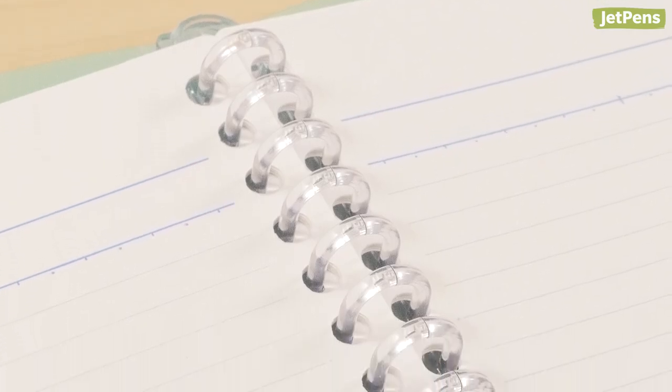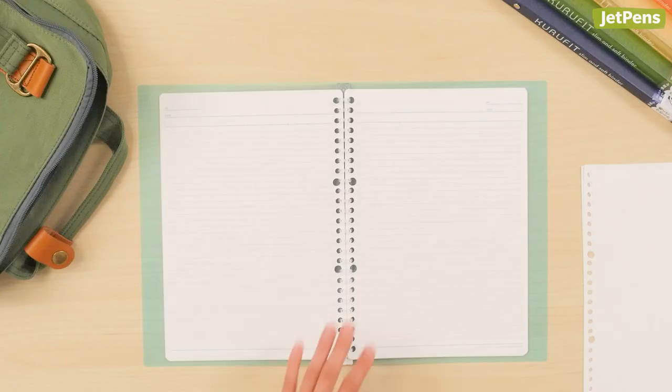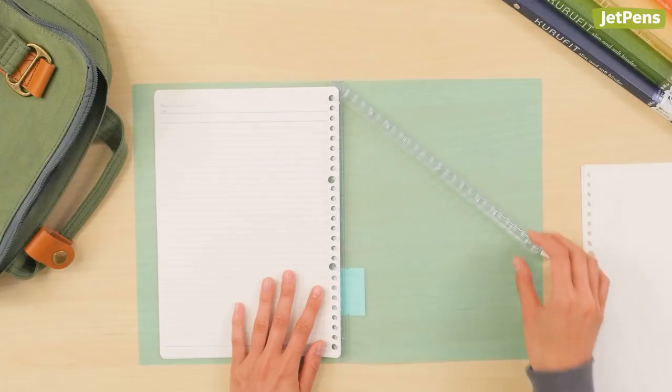Like the Kokuyo Campus Slide Binder, the Kuru Fit has a unique ring mechanism that makes it easy to rearrange papers. Just unhook the white tab at the bottom and slide the rings apart.